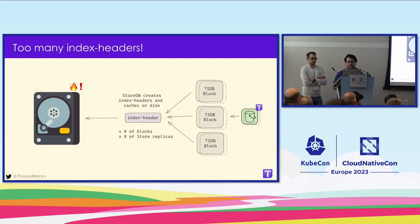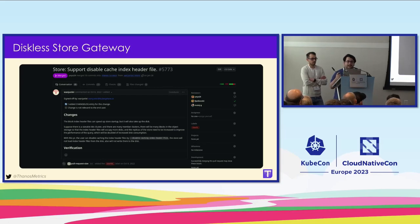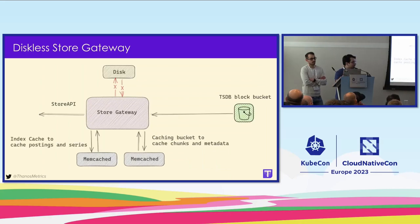With larger Thanos installations having hundreds of historical TSDB blocks in object storage and needing higher availability via multiple replicas, caching the index header files on disk has become problematic and unsustainable. StoreGateway startup time slows down as it needs to cache all index header files during startup, and the disk fills up very quickly. The solution is to disable caching of index headers on disk completely — the StoreGateway becomes stateless, creating its internal memory representation on the fly during a query instead. This makes it possible to run StoreGateway over hundreds of TSDB blocks in object storage without paying for ultra-expensive SSDs.